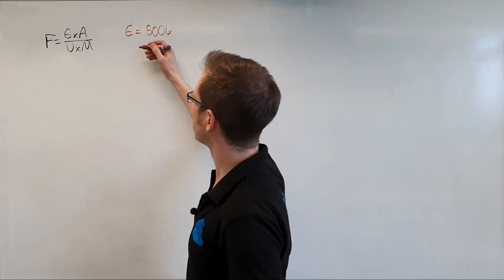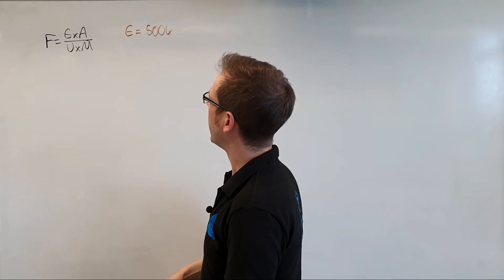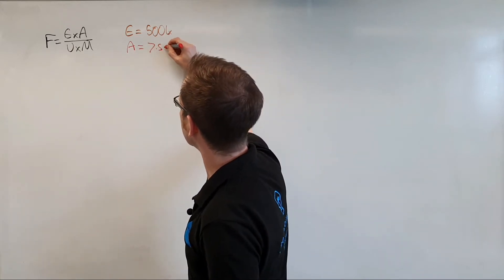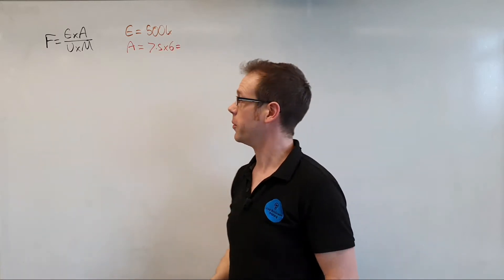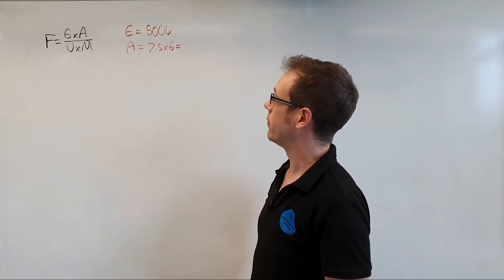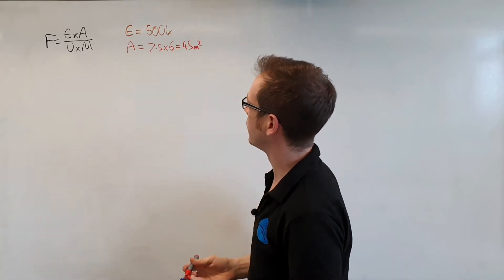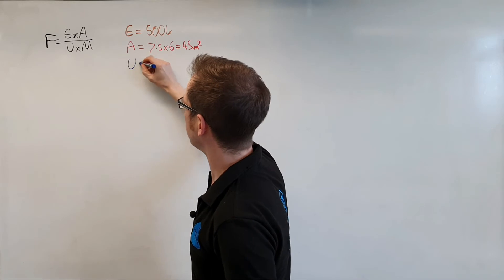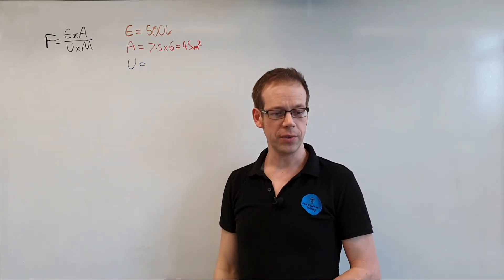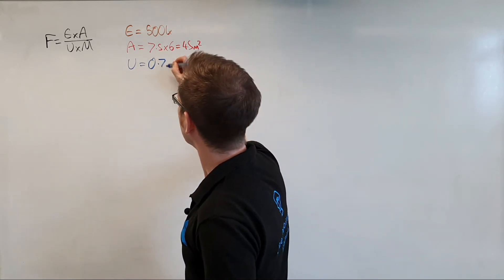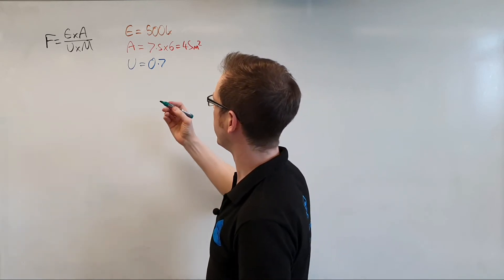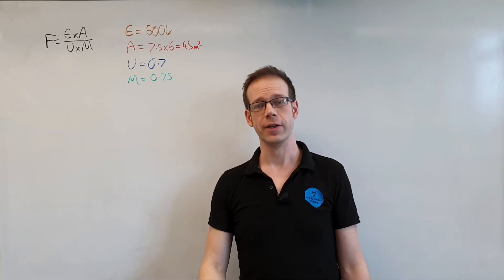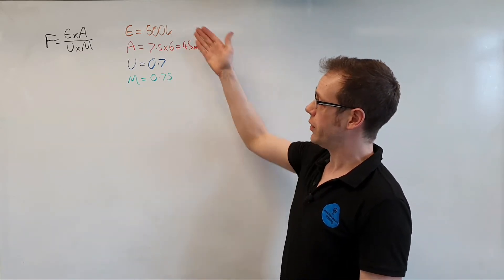We then need to figure out the area A, which we calculate by multiplying length by width: 7.5 times 6 gives us 45 square meters. The question also states the utilization factor U is equal to 0.7, and the maintenance factor M — which has no units — is 0.75. So we've got all the numbers we need lined up straight away.